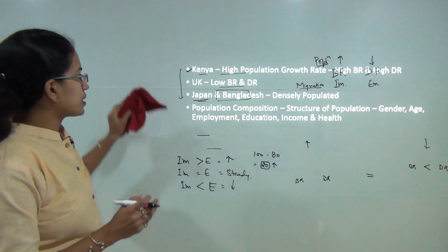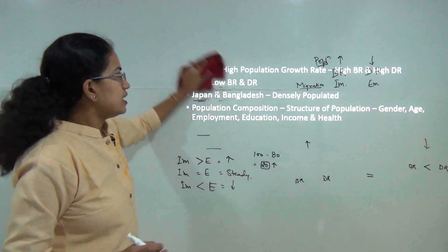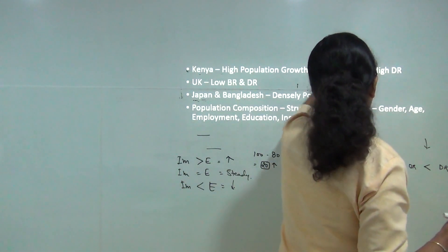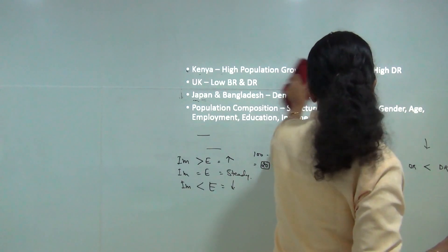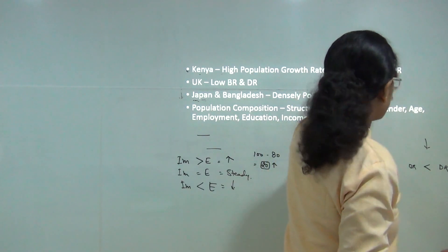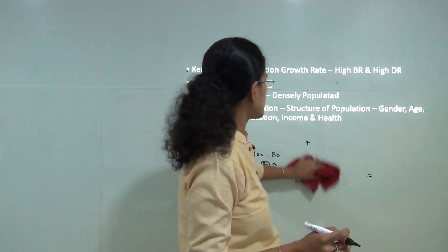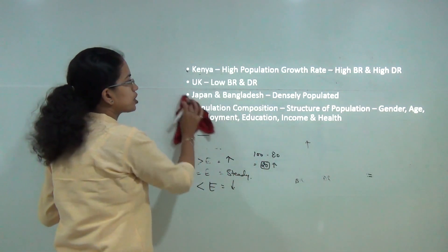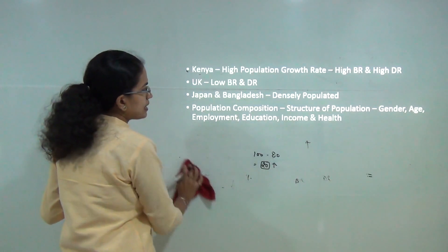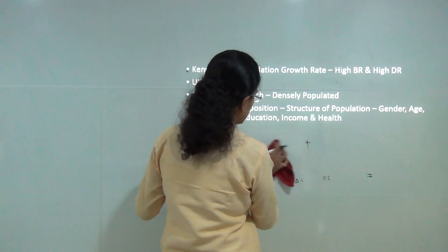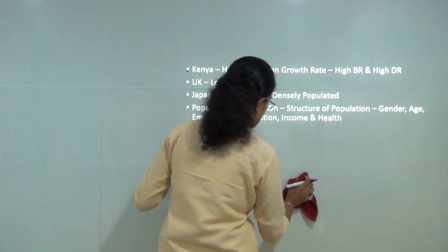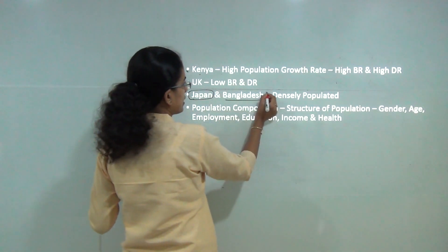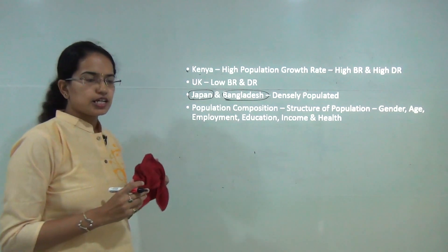Some important highlights: Kenya has a higher population growth rate with high birth rate as well as high death rate — that is, high mortality rate. In the United Kingdom, you have both low birth rate and low death rate. Japan and Bangladesh are considered highly populated regions; however, Japan is economically developed while Bangladesh is an LDC, or less developed nation.